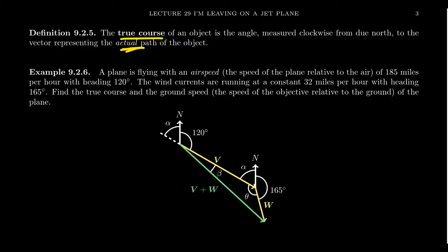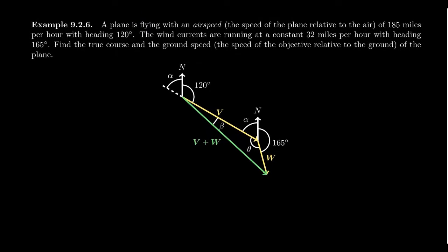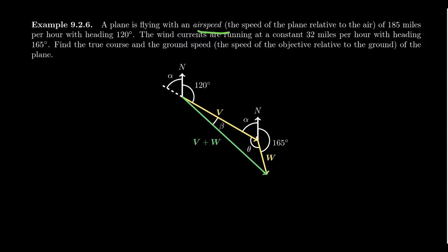Let's look at an example of an airplane. A plane is flying with an airspeed — the speed of the plane relative to the air — of 185 miles per hour, and its heading is 120 degrees. The wind currents are running at a constant 32 miles per hour with a heading of 165 degrees. We want to find the true course and the ground speed, which is the speed of the object relative to the ground — the magnitude of the true course vector.